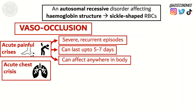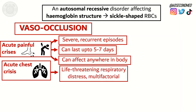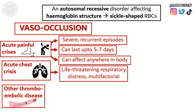An acute chest crisis is a life-threatening acute respiratory distress syndrome unique to sickle cell, driven by vaso-occlusion as well as many other contributing factors. Sickle cell also causes other thromboembolic disease in both arteries and veins.